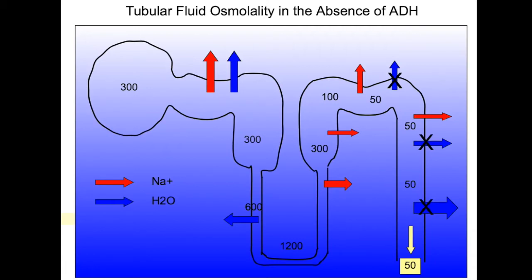Dilute urine with free water in it cannot be made in the proximal tubule, where fluid remains isotonic to plasma at about 300 milliosmolar, or in the hairpin turn of the loop, where it becomes concentrated to as high as 1200 milliosmolar. Dilute or hypotonic fluid can be made only in the ascending limb of Henle and the distal convoluted tubule. Here, solute is reabsorbed without water following, and the fluid becomes dilute down to about 50 milliosmolar. If no ADH is around, water stays in the collecting tubule instead of being reabsorbed, and lots of free water can then be excreted.